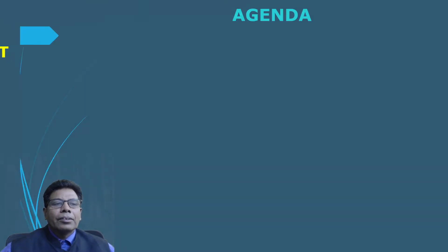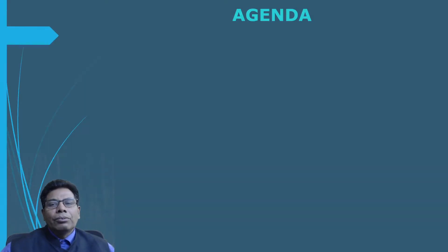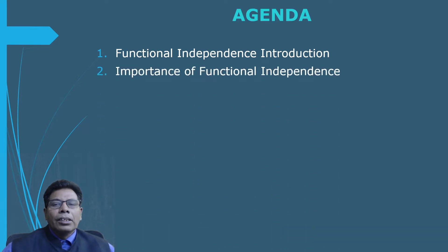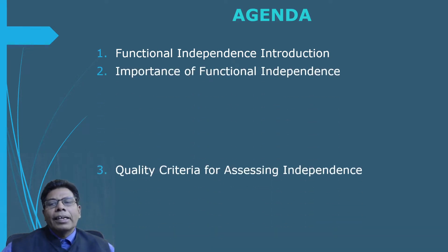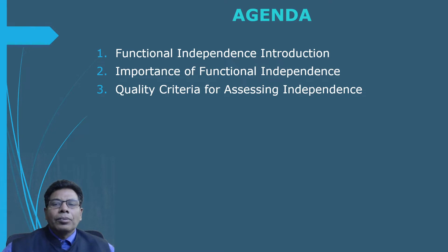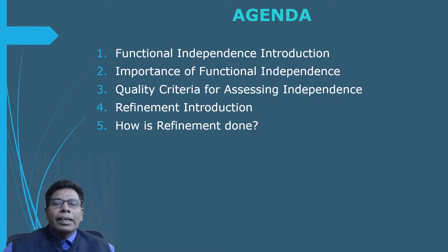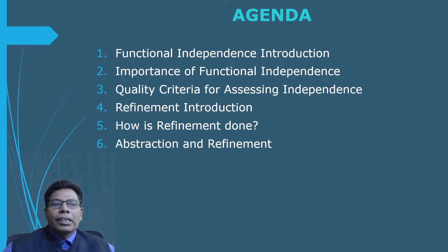Let us start with the agenda. First we will discuss the functional independence introduction, then the importance of functional independence, then quality criteria for assessing independence, then refinement introduction, then how refinement is done, and then abstraction and refinement. So these are the topics which we will be discussing.